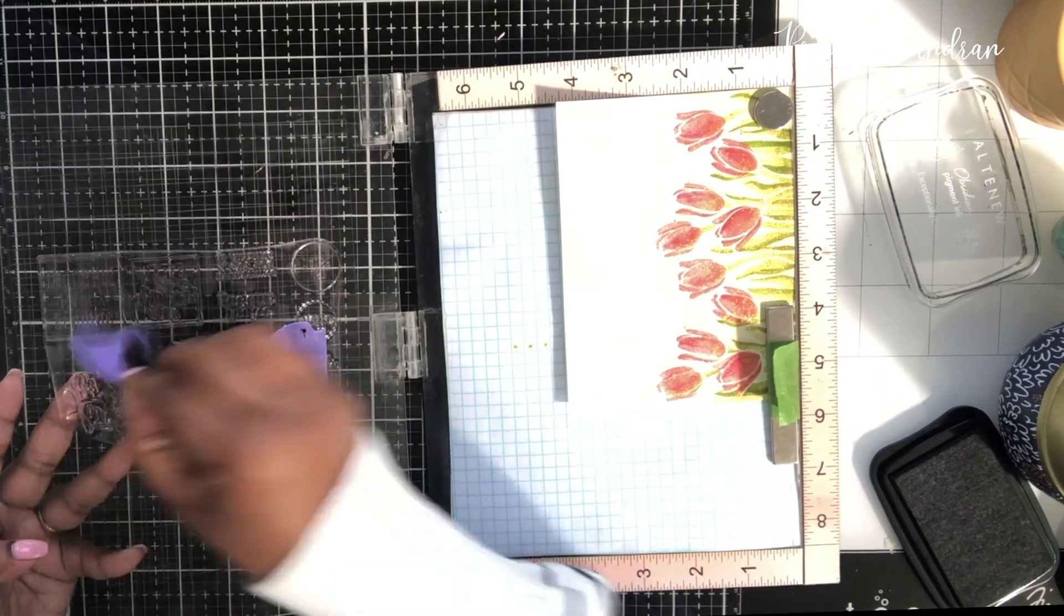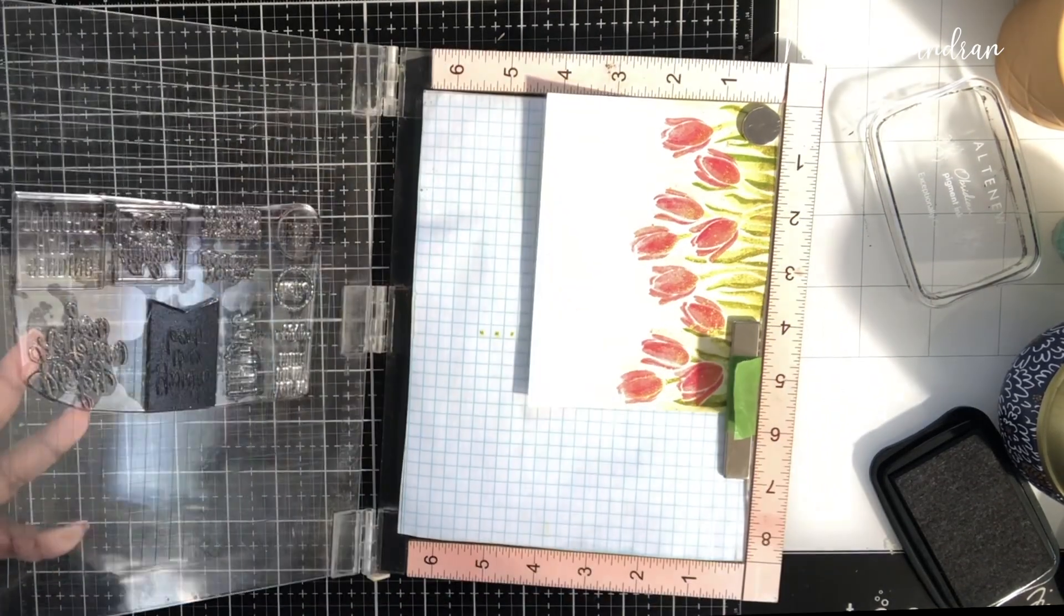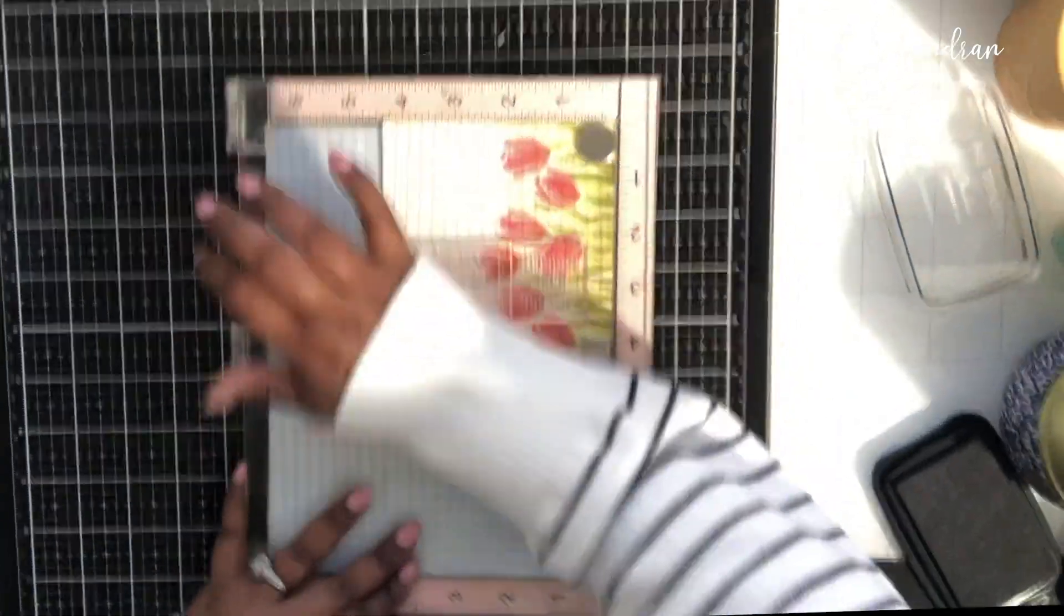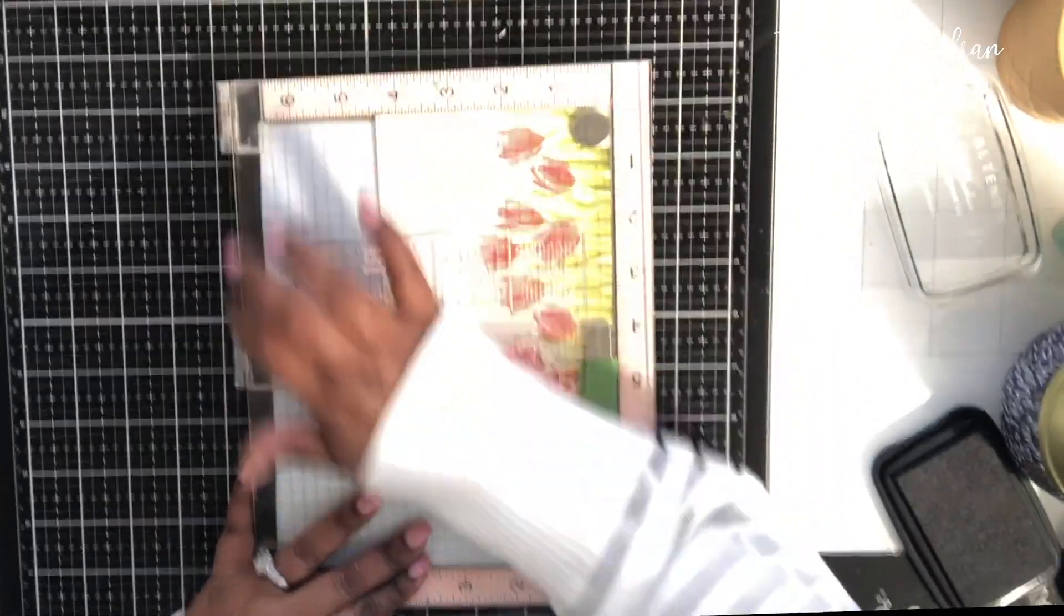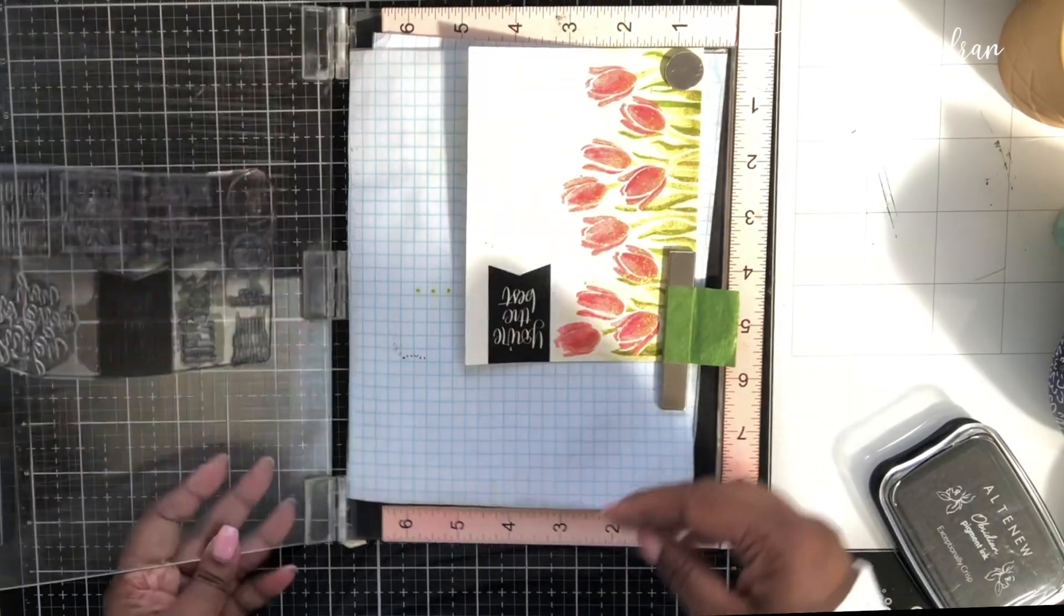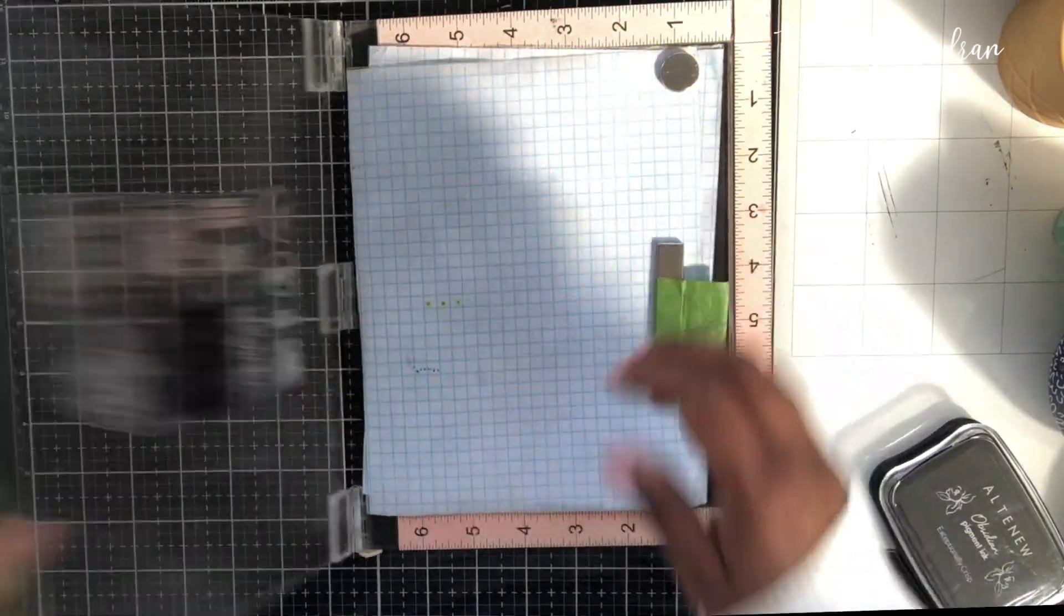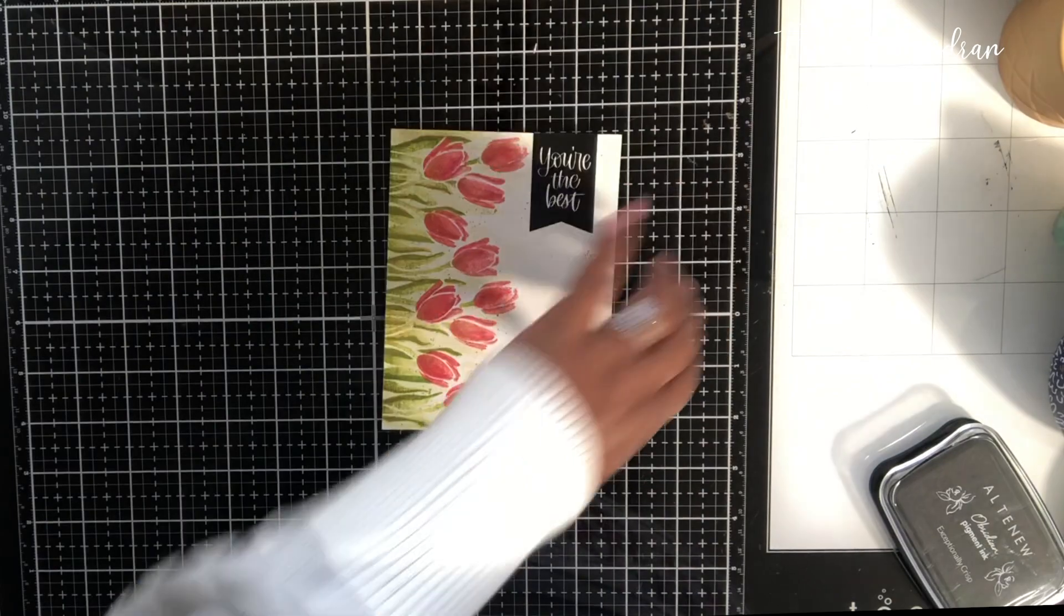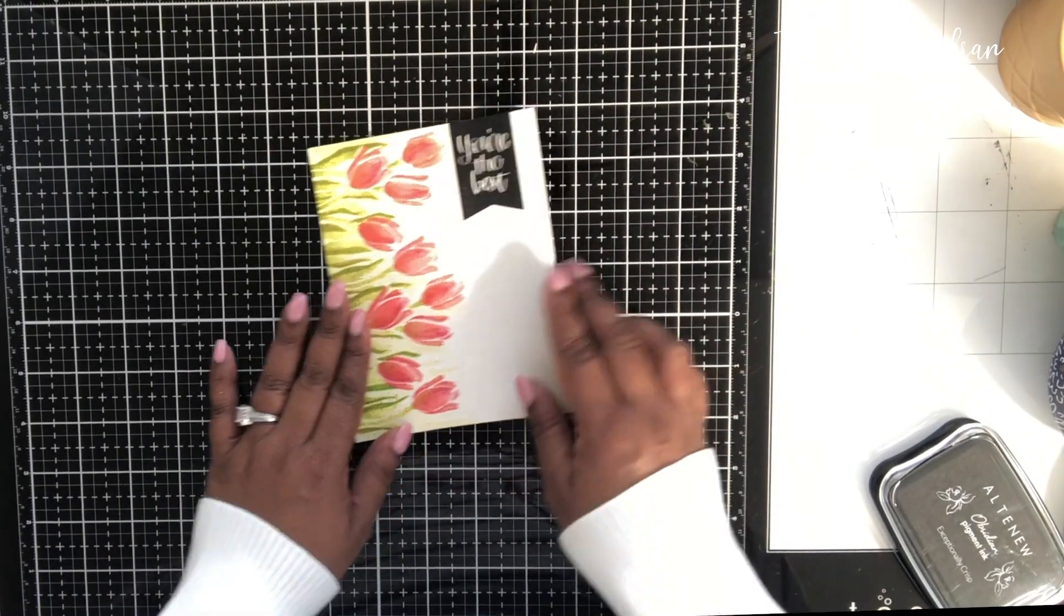I covered all the other places that I don't want the ink to be and then I inked that one label sentiment with black ink and then I stamped it right on the top part of the card panel.